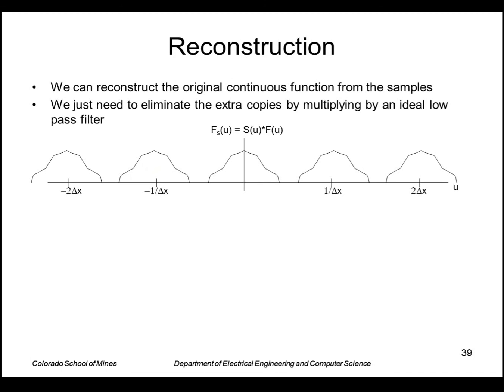Now, if I want to reconstruct the original continuous image, I can do that if I just isolate the center portion here and get rid of all these copies. I can do that by multiplying a rectangle function that's zero everywhere out here and one over here.